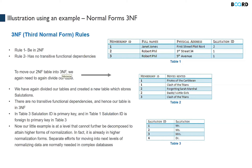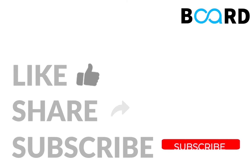In a real database, you will see a mixture of normal forms — some tables in first normal form, some in second, third, or fourth. For example, table two is not in the second normal form because there is no single-value primary key, so it remains in the first normal form. A database will be a mixture of different tables at different normal forms.